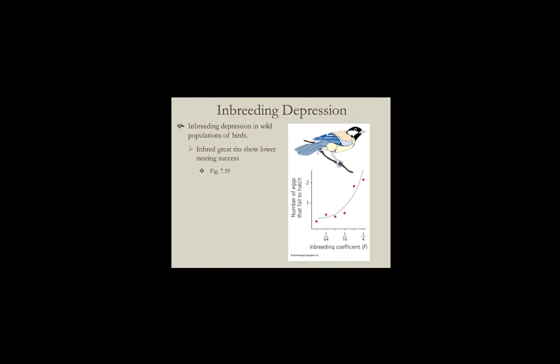In natural populations, inbreeding has negative consequences. Looking at the great tit, a European species similar to chickadees, the inbreeding coefficient represents the percentage of genes two individuals share. More inbred individuals had a greater number of eggs that failed to hatch — hatch failure is a really common thing in inbred bird populations. Outbred individuals didn't have this issue.